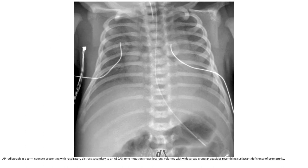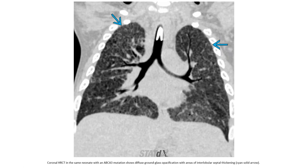Let's see the first case. This is a term neonate presenting with respiratory distress due to ABCA3 gene mutation. The chest X-ray shows low lung volume with widespread ground glass opacity resembling surfactant deficiency of prematurity. The same case on CT shows diffuse ground glass opacification with areas of interlobular septal thickening.